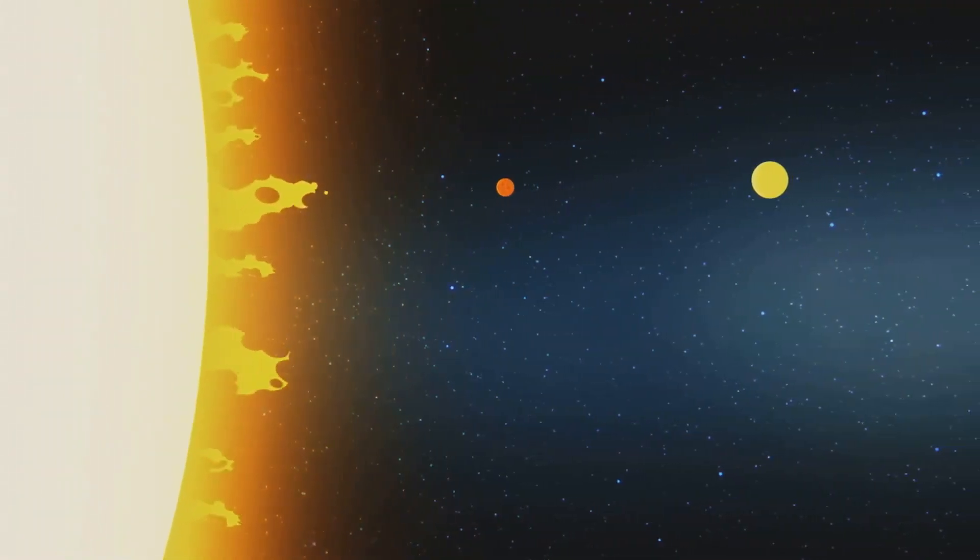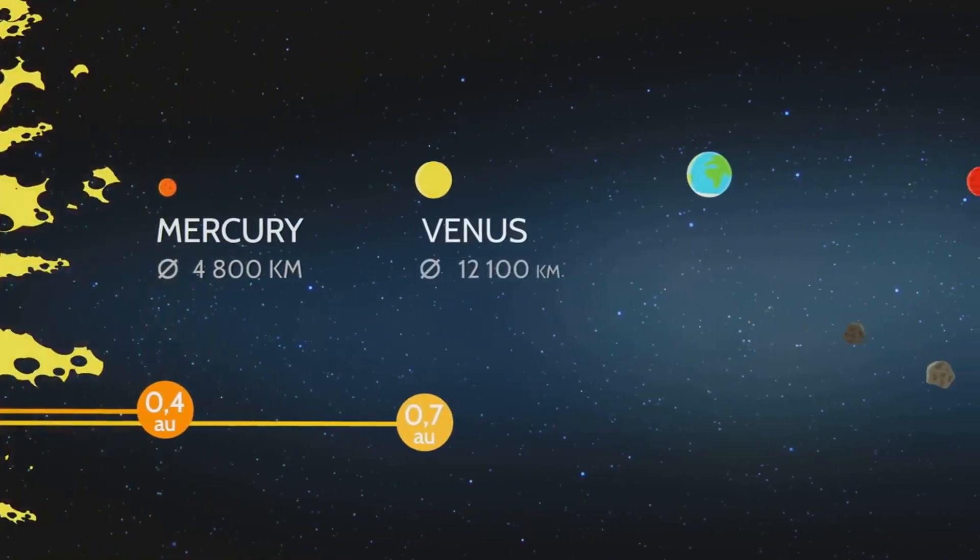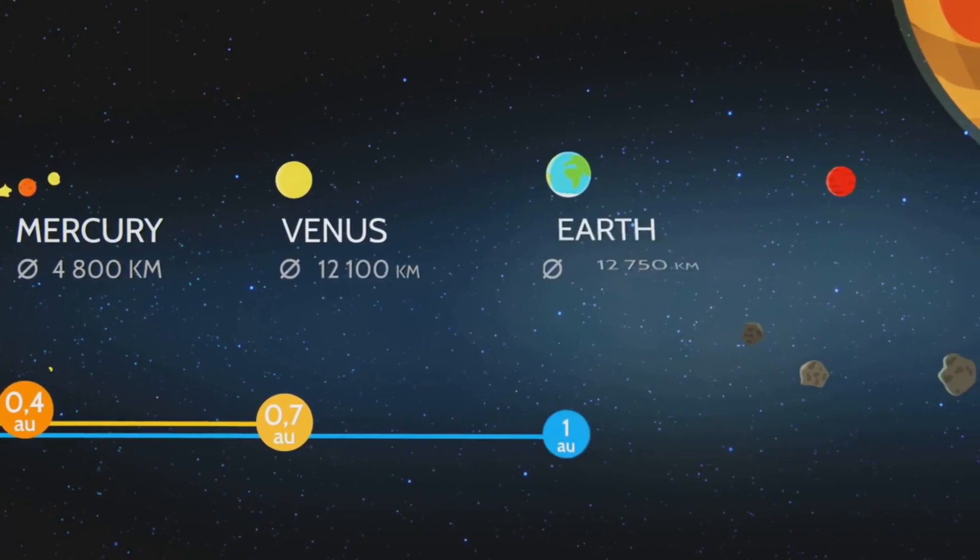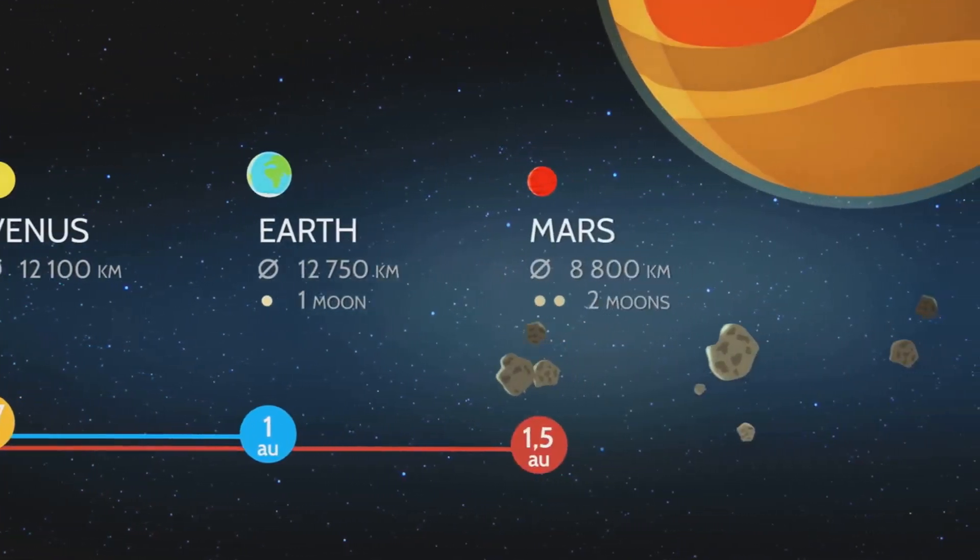Now you might be wondering what does this mean for our planets? Well, as the sun moves it drags the entire solar system along with it. Imagine the sun as a cosmic tugboat, pulling planets, asteroids and comets in its wake.